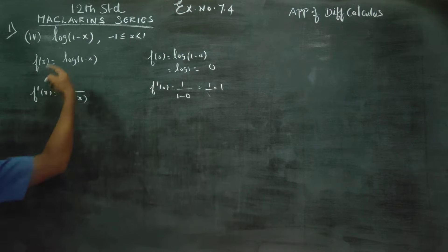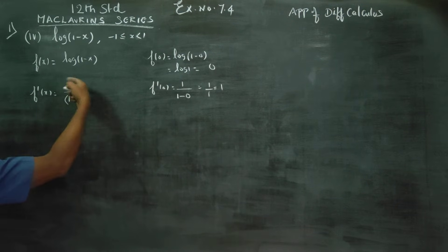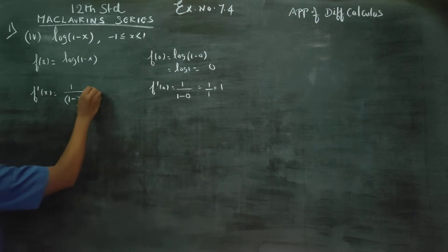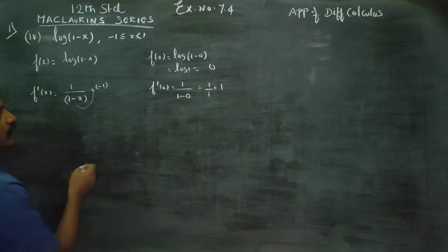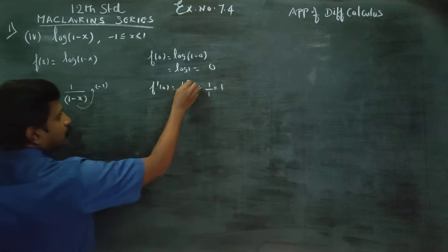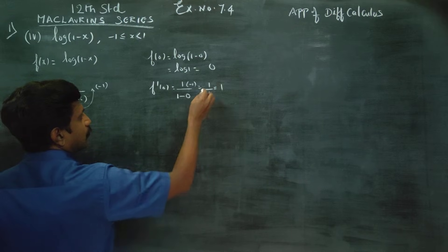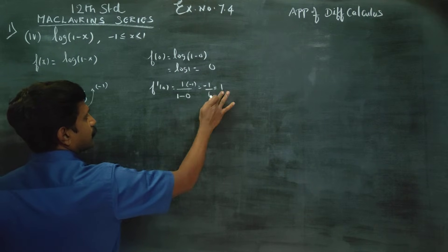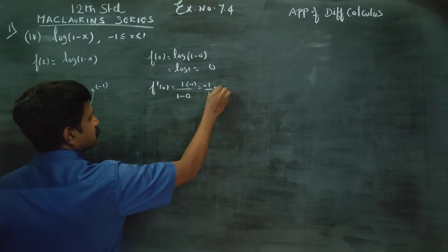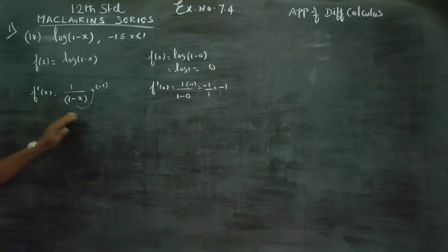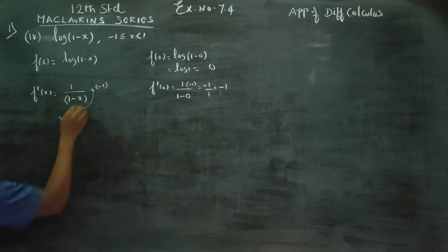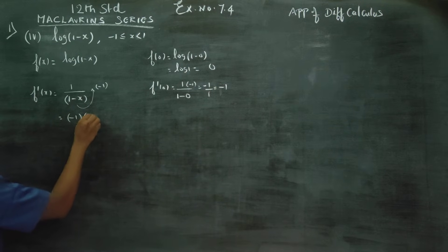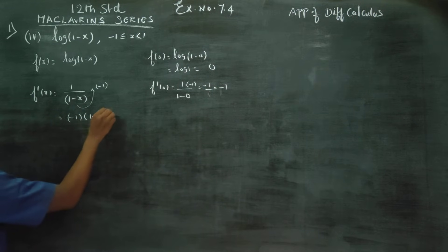When you differentiate the logarithm, you get 1 by (1 minus x). Differentiating (1 minus x) gives minus 1. So f'(x) = minus 1 over (1 minus x), which can be written as minus 1 times (1 minus x) to the power minus 1.